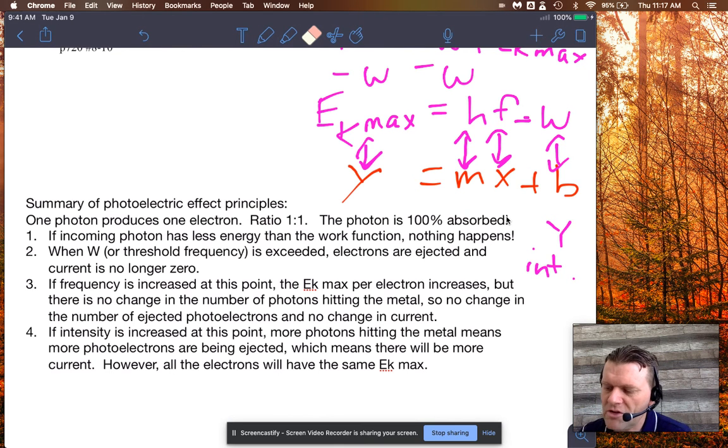So again, that's what number two says when the threshold frequency or the work function is exceeded, then the electrons are ejected and the current now in the photoelectric effect setup, right? The tube, the vacuum tube, that's got the cathode and the anode, the current will no longer be zero.